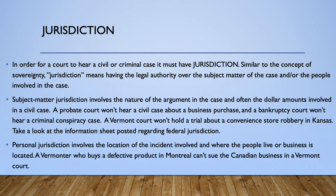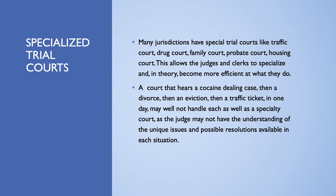I've posted an information sheet regarding the federal court system that sets out some of the differences in jurisdiction between federal and state courts. Personal jurisdiction involves the location of the incident involved and where the people live or the business at issue is located. Many jurisdictions have specialized trial courts like traffic court, drug court, family court, probate court, and housing court.